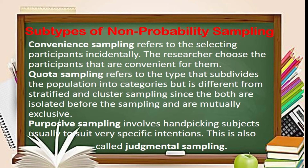Quota sampling is somewhat similar to stratified sampling in that the population is divided into strata, and the researcher deliberately sets specific proportions in the sample, whether or not the resulting proportion is reflective of the total population. This is commonly done to ensure the inclusion of a particular segment. For example, a researcher wants to survey employees of a company regarding their thoughts on the company's new policies. The researcher intends to have representatives from all departments, but one department is so small that random sampling might result in it not being represented. The researcher then sets a quota of respondents from that department to ensure their inclusion.